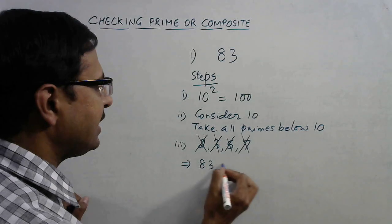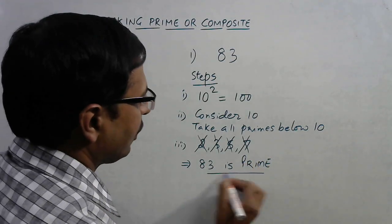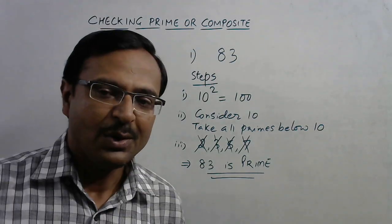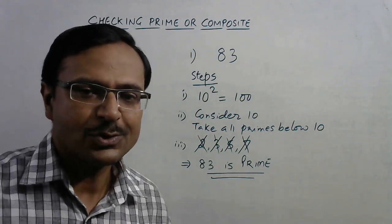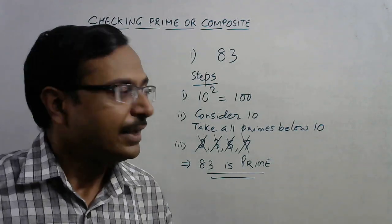That means 83 is prime. Now this is the method. Now we need to implement this method for some larger numbers. So I'll take some of the larger numbers now and let's see whether we can find out whether a given number is prime or not.